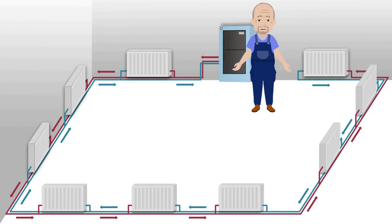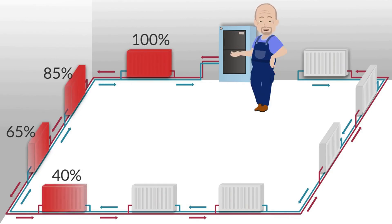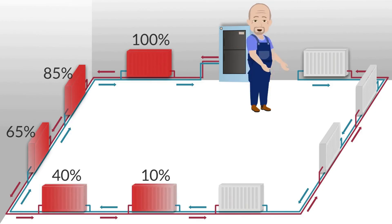If we use this diagram to start the system with all valves open, we get something like this. The first radiator will turn on at 100%, the second at about 85%, the third at 65%, the fourth at 40%, and the fifth at 10%. And the rest of the radiators will most likely never turn on by themselves.